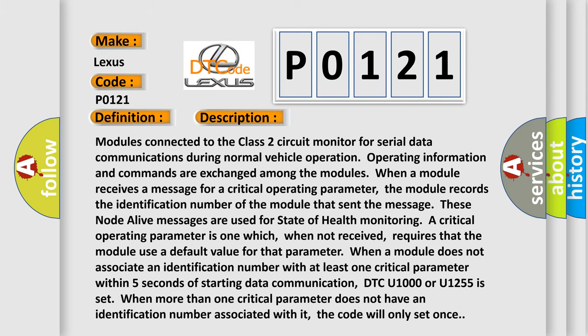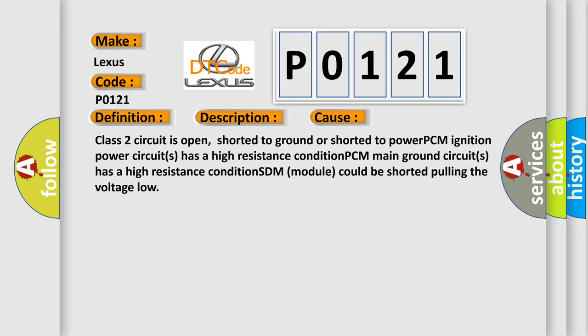This diagnostic error occurs most often in these cases: Class 2 circuit is open, shorted to ground or shorted to power. PCM ignition power circuits has a high resistance condition. PCM main ground circuits has a high resistance condition. SDM module could be shorted pulling the voltage low.